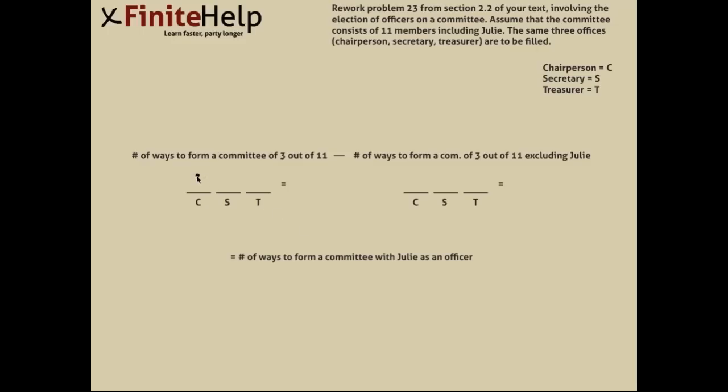So for the first part, we're getting the number of ways to form a committee of three out of 11. So, obviously, if you have 11 members to pick from, that's 11 for the first slot. Then you have 10. Then you have 9. And multiply those together, and you get 990.